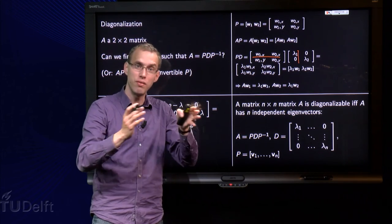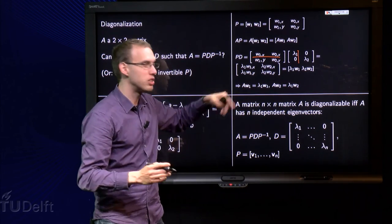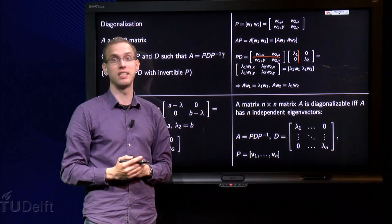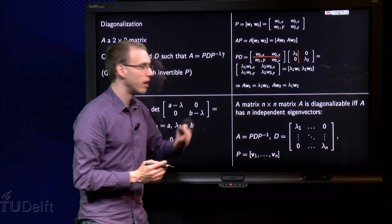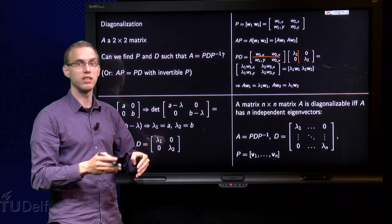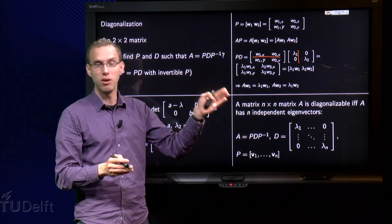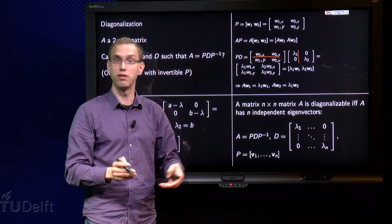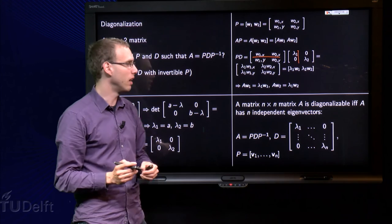Because only if I have enough independent eigenvectors I can do this trick and I can form this matrix P. So if we have independent eigenvectors we can form P, and if we don't have enough we cannot find an invertible P. So it is if and only if.